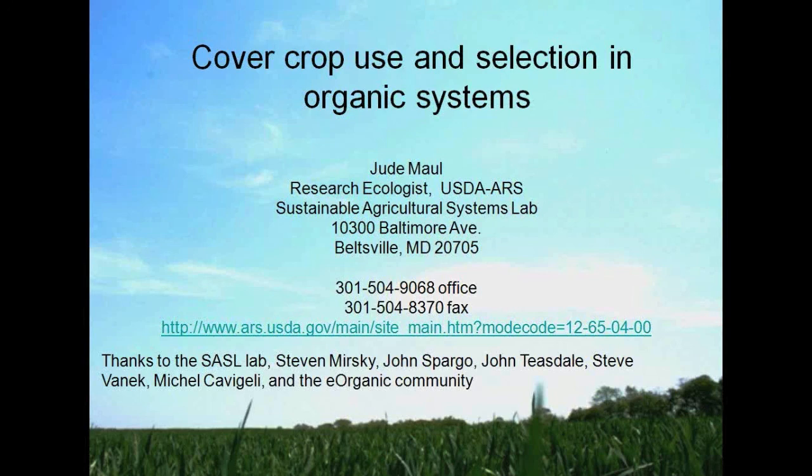Sorghum-Sudan does well in droughty conditions. You'd want to plant it in late spring or early summer — probably around now or a little bit later. That would be a good choice if your goal is to increase organic matter in somewhat dry conditions.